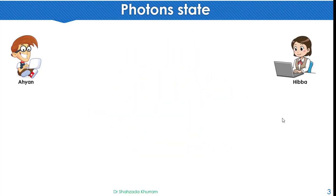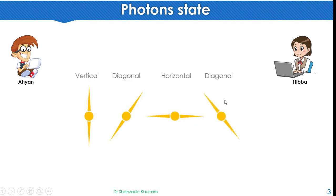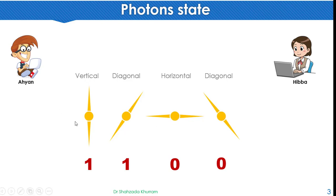Let's discuss the states of a photon. Photons have basically four states. The first state is vertical, and another is diagonal. Then there is horizontal state and another diagonal state. If you want to send a 1, you will use the vertical or diagonal state. And if you want to send a 0, you will send the horizontal or diagonal state.